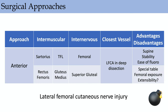For surgical approaches, you want to know the muscular or internervous interval for each approach. For the anterior approach, the superficial interval is between the sartorius and the tensor fascia, innervated by the femoral nerve. The deep interval is between the rectus and the glute medius, supplied by the superior gluteal nerve. The most common injury is lateral femoral cutaneous nerve injury, presenting as meralgia paresthetica over the anterolateral thigh. It's a supine approach with good stability and fluoroscopy use, though femoral exposure can be difficult.